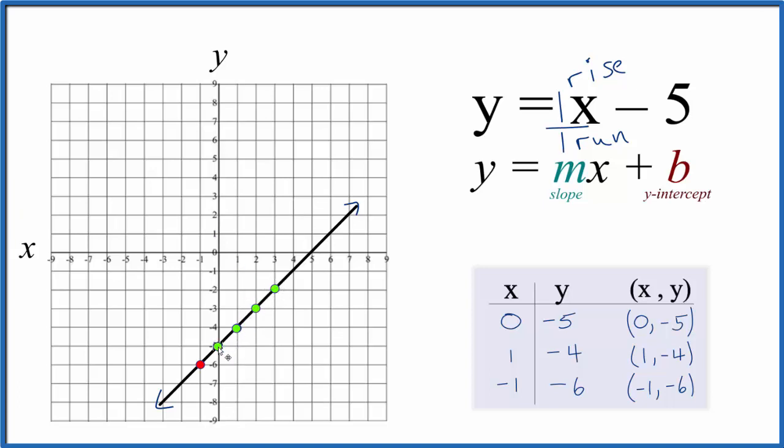Likewise, we could go to our y-intercept and go down 1 and over 1 in the opposite direction. Down 1 over 1 in the opposite direction. And all of these points, they're going to be here on our line. So that's how you draw the graph for the equation y equals x minus 5. This is Dr. B. And thanks for watching.